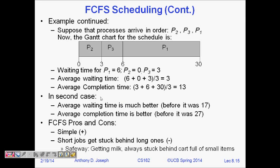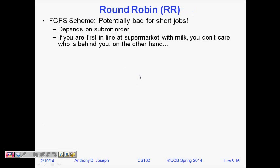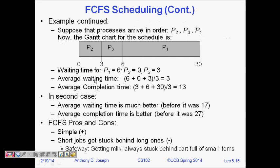First Come First Serve has pros and cons like everything else. It's very simple, but if shorter jobs are behind longer jobs they get stuck, increasing waiting time and response time. Next time we will look at another scheduling algorithm known as Round Robin. I hope you understand this — thanks a lot, please give comments and subscribe to my YouTube channel.